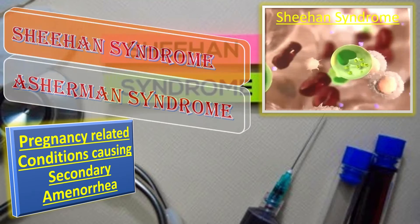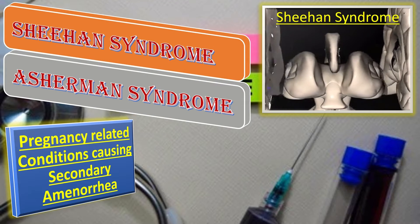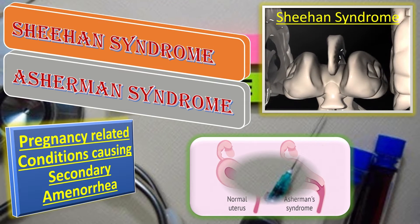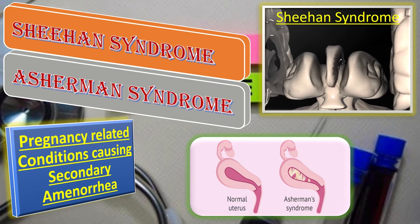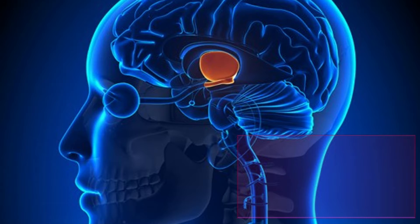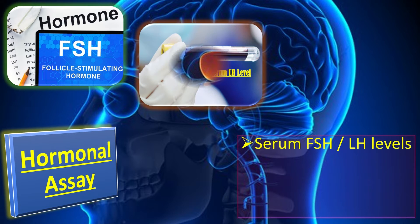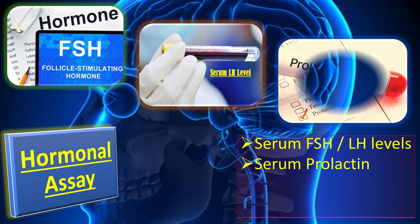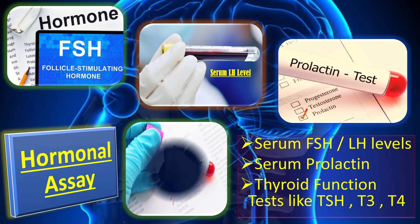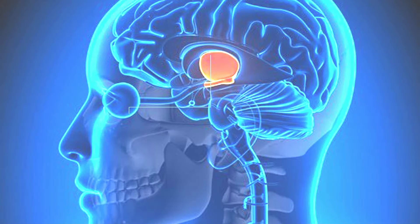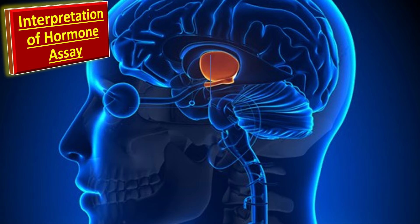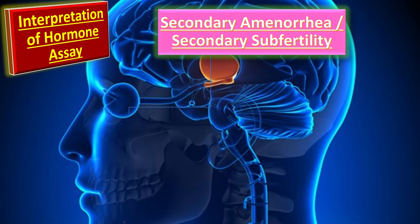Sheehan syndrome not only causes infertility but it also causes secondary amenorrhea. The pregnancy-related conditions causing secondary amenorrhea include Sheehan syndrome and Asherman's syndrome. In order to diagnose Sheehan syndrome, we do hormonal assay, which includes serum FSH and LH levels, serum prolactin, and thyroid function tests. The interpretation of hormone assays is important to reach a diagnosis.